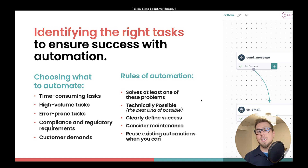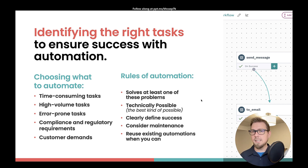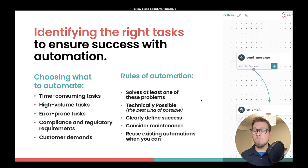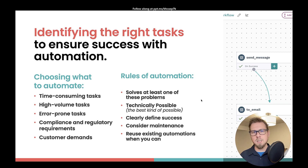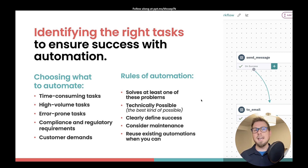Next, you want to consider maintenance. Just like the light switch we talked about, lights can go out. You flip on the switch and suddenly the light doesn't turn on. What does that require? Maybe it's a light bulb, maybe it's a fuse. You need to understand what that maintenance looks like and what it's going to take to make sure it's updated and continuously working over time.